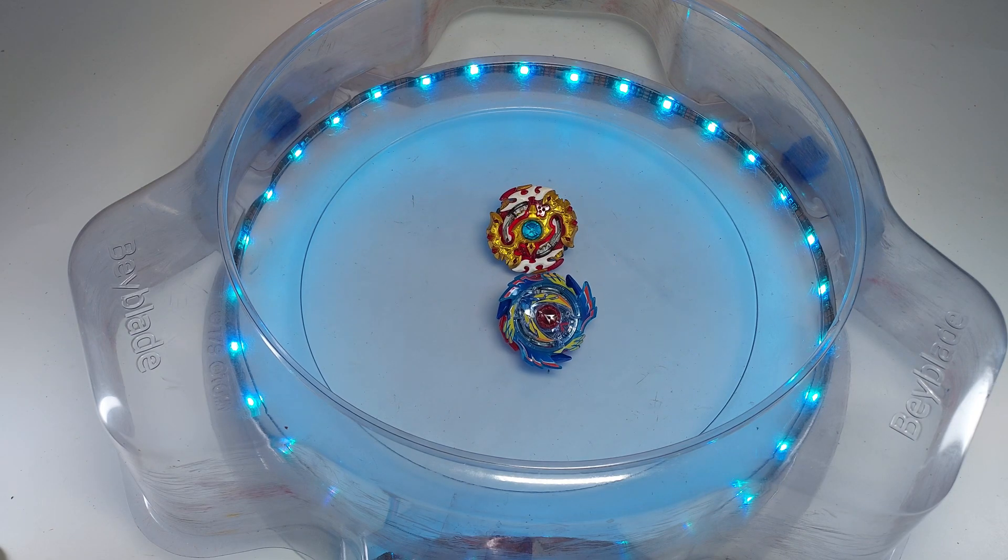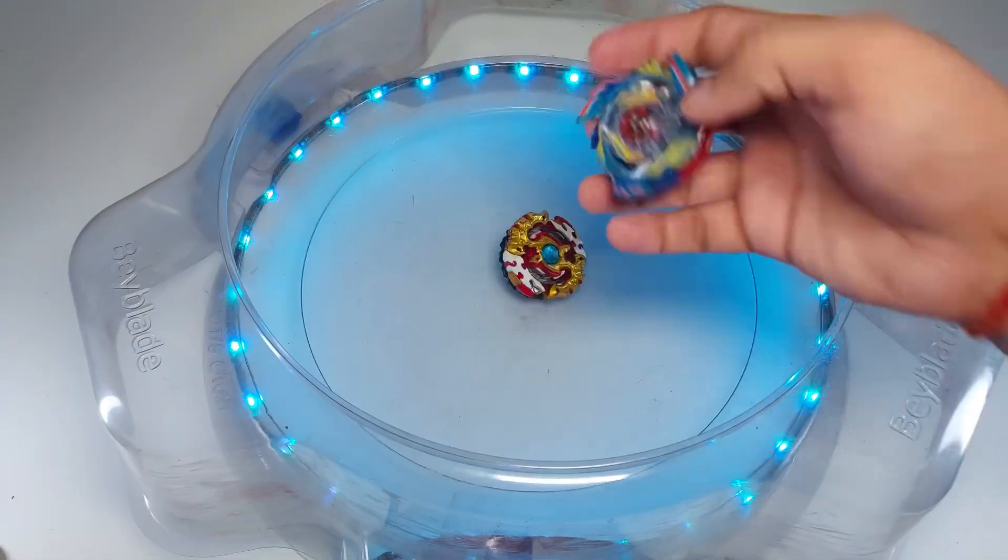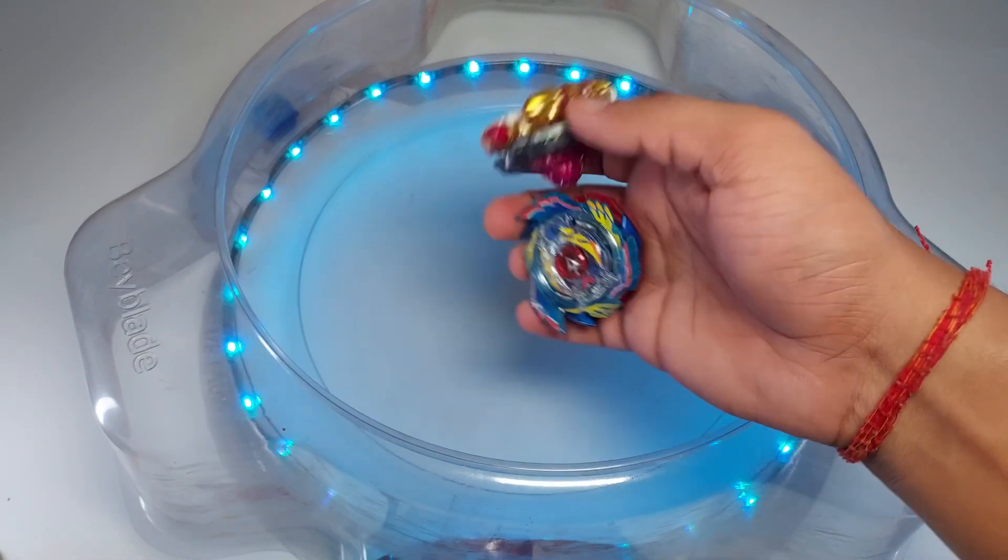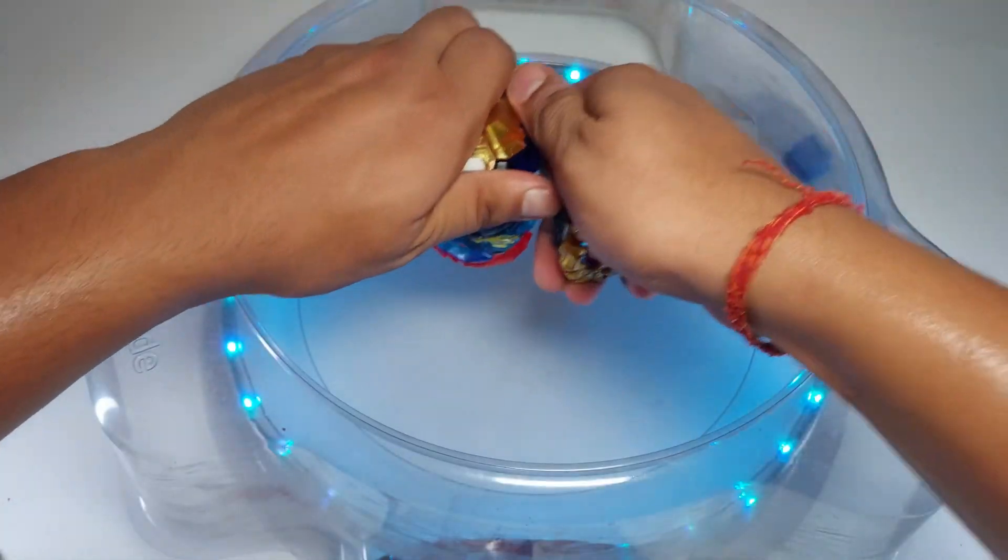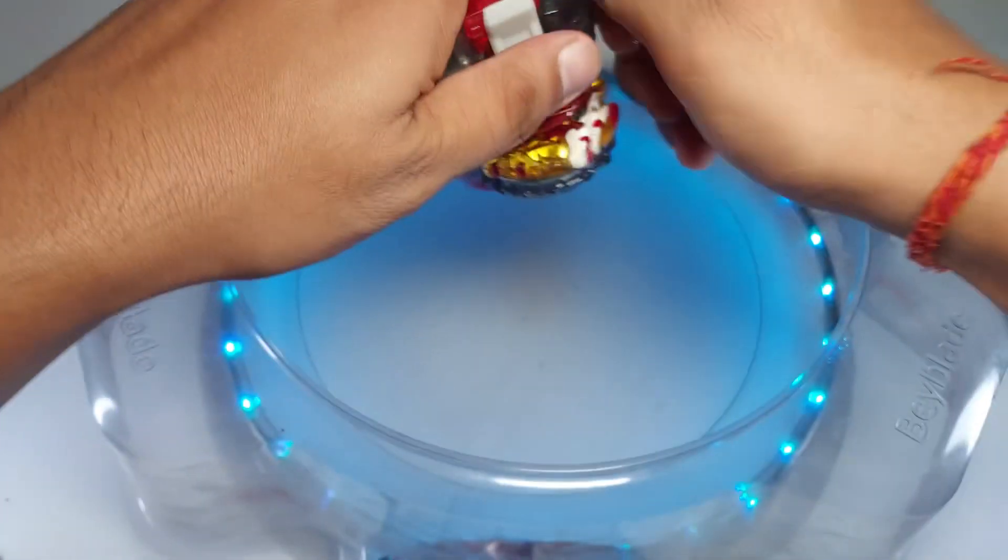First win goes to Spriggan, so the score is 1-0. Let's see who takes the next one. This time I'm gonna launch Valkyrie first. Here we go, let it rip!